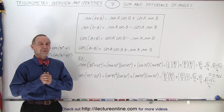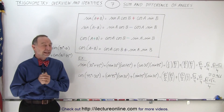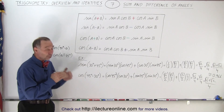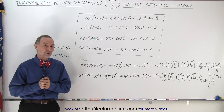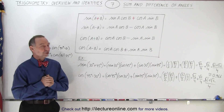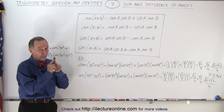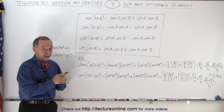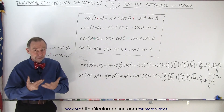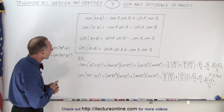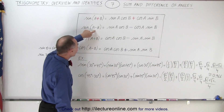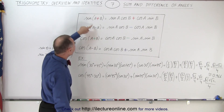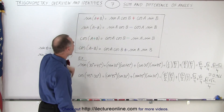Welcome to my lecture online. The next four identities are again really important in trigonometry and you definitely should memorize what's inside the box. Notice that we have what we call the sum and the difference of angles for the sine and the cosine.